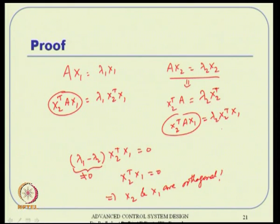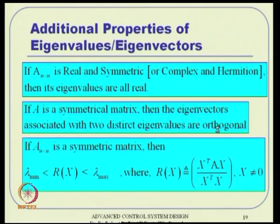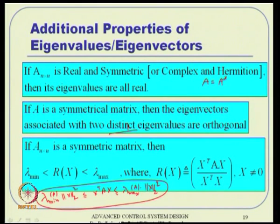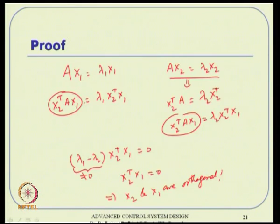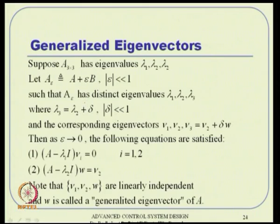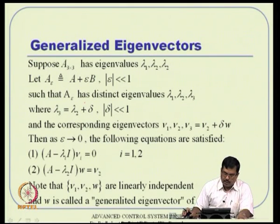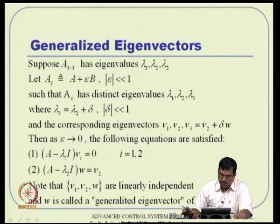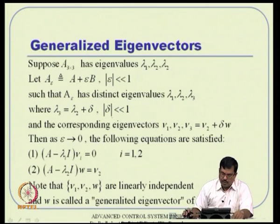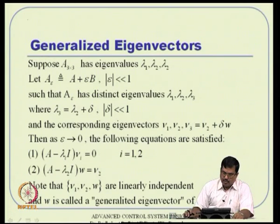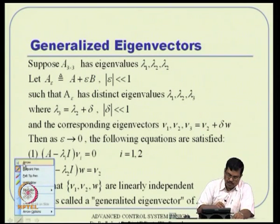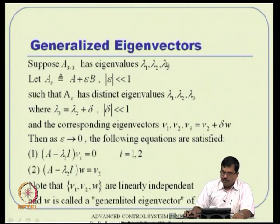This completes the proof. These two properties — real eigenvalues and orthogonal eigenvectors for distinct eigenvalues — can both be shown cleanly using the symmetry condition A = A^T.